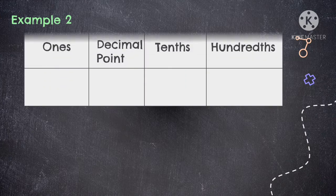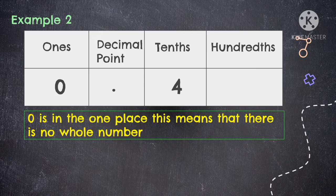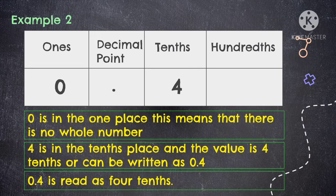Let's have example number 2 using the place value chart. Let us identify the place value and the value of this given decimal number. As you can see, 0 is in the ones place — since the digit is 0, that means there is no whole number. Then 4 is in the tenths place, and the value of 4 is 4 tenths, or can be written as 0.4. Since there is no whole number, we just write 0, copy the decimal point and the digit. We read this decimal number as 4 tenths — say the digit, then mention the place value of the last digit.